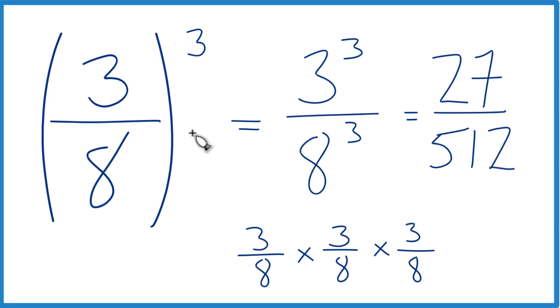So 3 eighths to the third power, or 3 eighths cubed, equals 27 over 512. That's it.